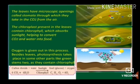Oxygen is given out in this process. Besides leaves, photosynthesis also takes place in some other plant parts like green stems, as they also contain chlorophyll.